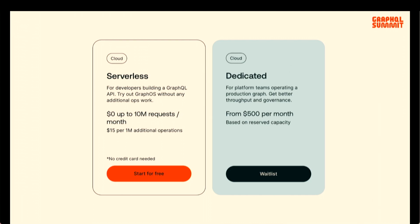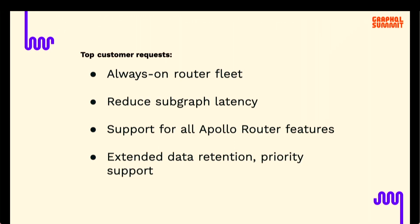But customers came to us and said, 'I want to run a supergraph at scale — I want more router performance and more throughput.' One of the things about serverless is it scales to zero after a period of inactivity, so customers said they wanted lower latency without a warmup time. Our mission with Dedicated was to create an always-on router fleet while still being fully managed. Serverless runs out of US Central, but customers said their subgraphs are running somewhere else — maybe even in multiple regions — and they wanted to reduce round-trip latency and use features like traffic shaping and observability with Datadog.